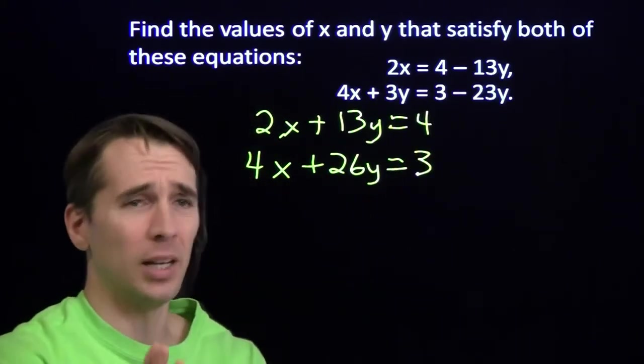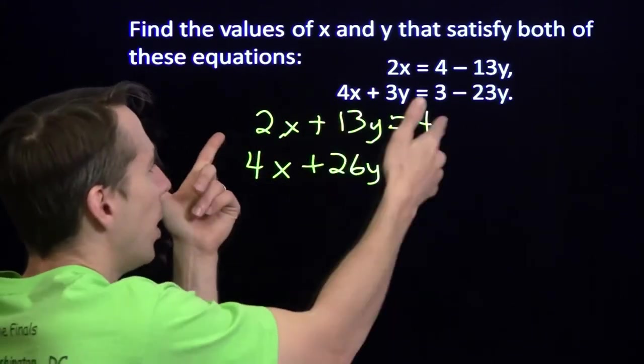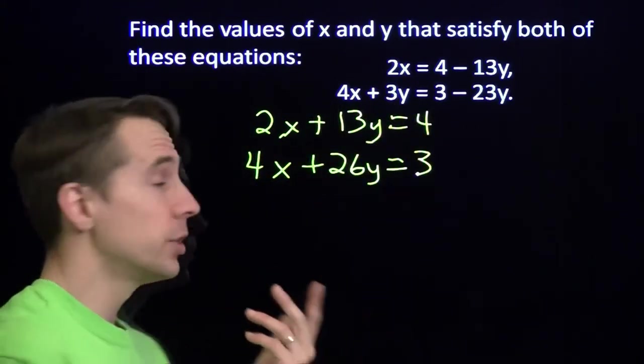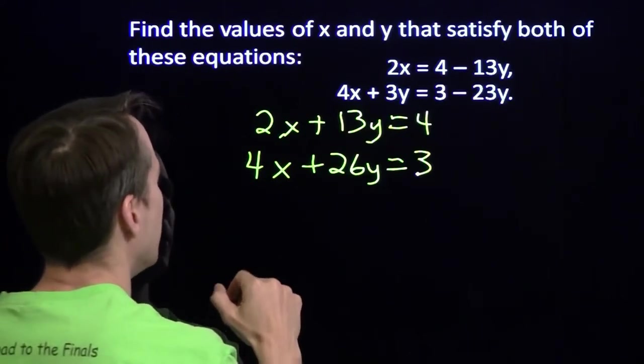Now, I want to set up an elimination. I'll go ahead and eliminate x. I'm going to multiply both sides of this equation by negative 2. That'll let me set up my elimination here.